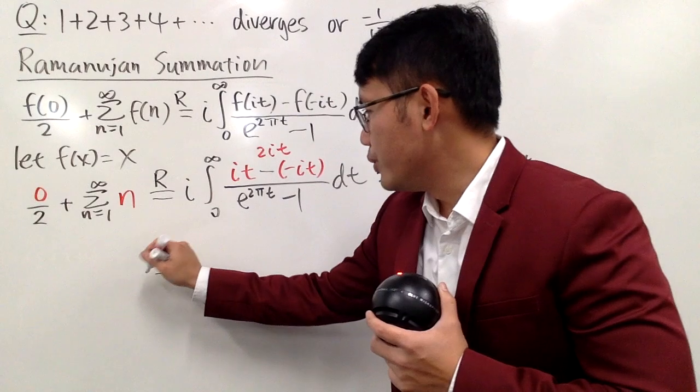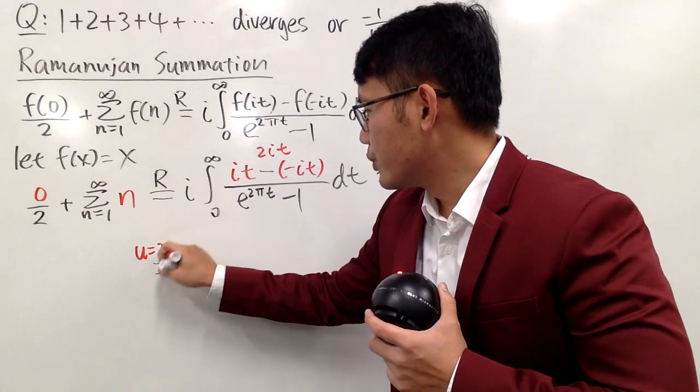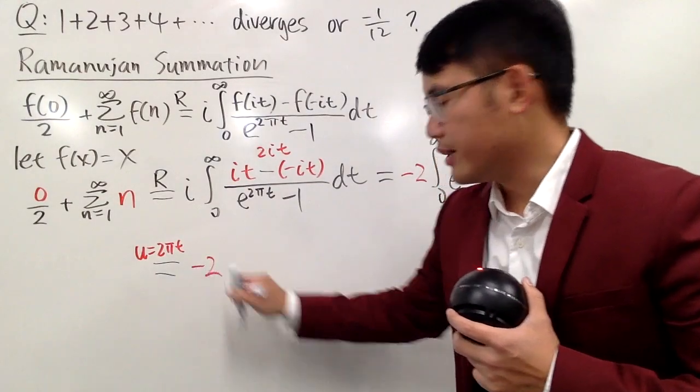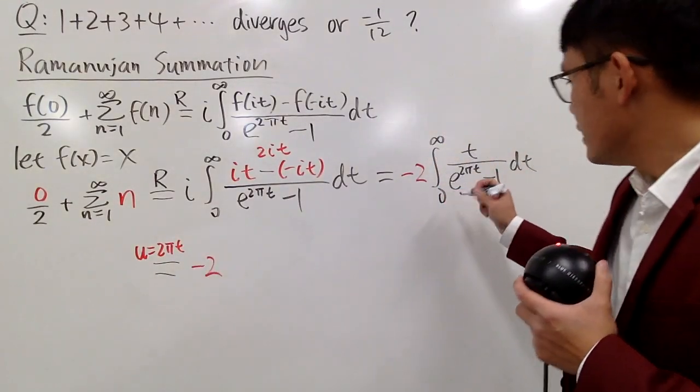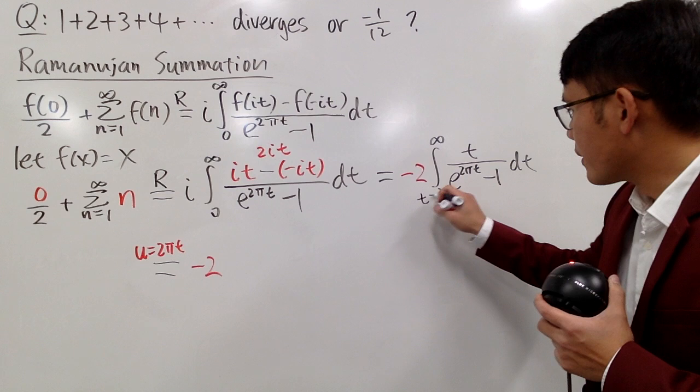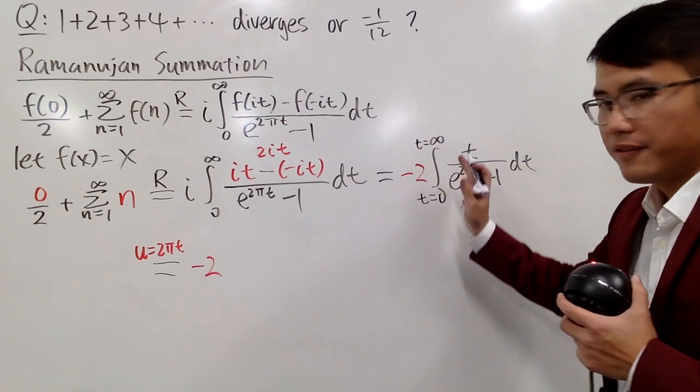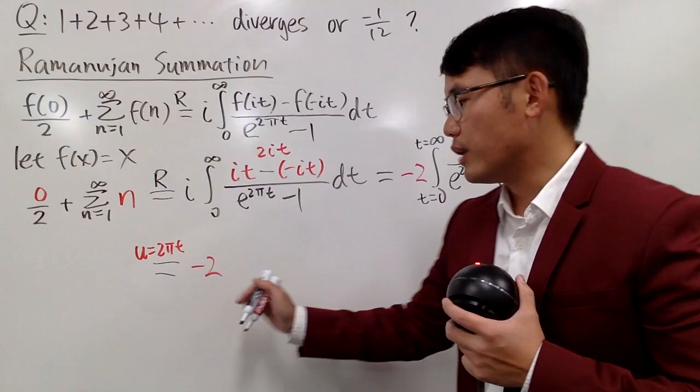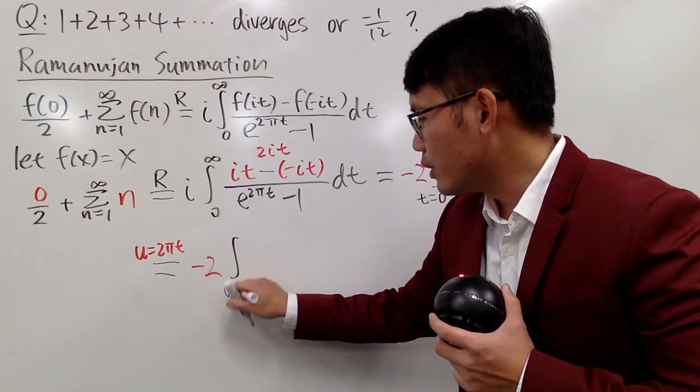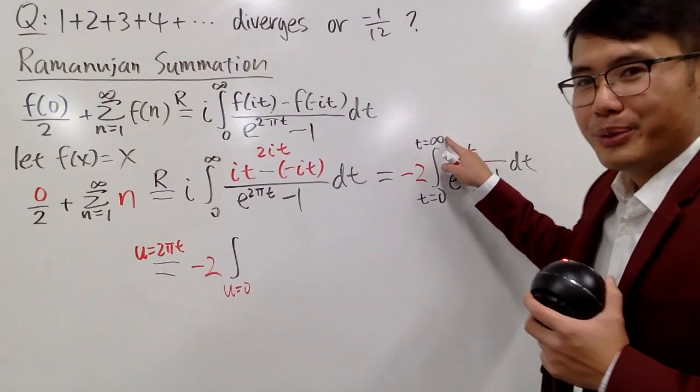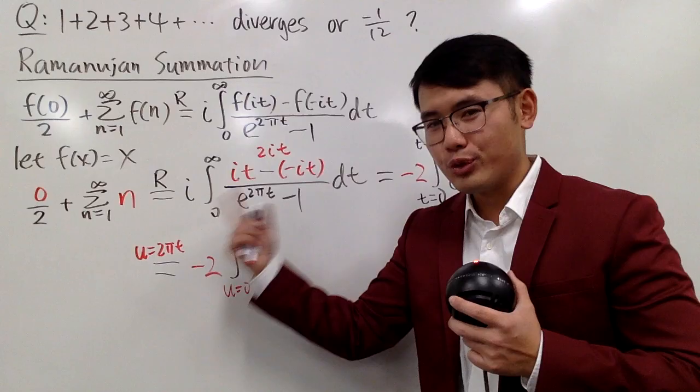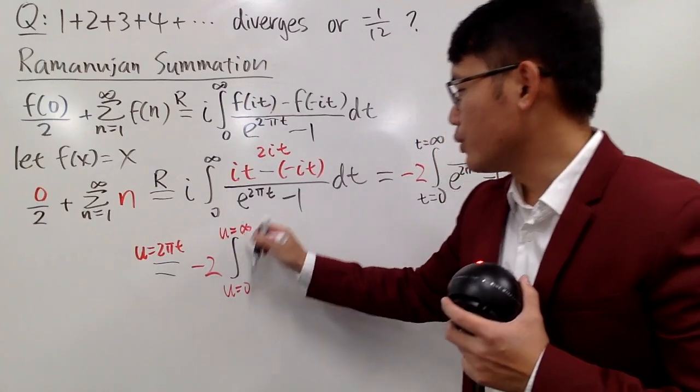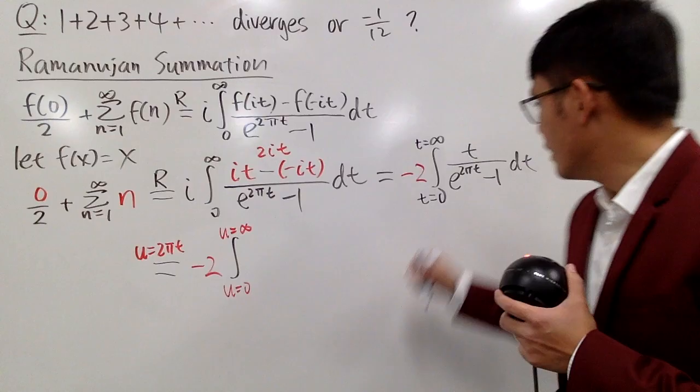To do so, I will just need a little u-sub. So I will take u equal to 2 pi t. In the front, we have the negative 2. And then, notice this integral is going from t equal to 0 to infinity. When t is 0, put it here, u will be 0 as well. So, in the u world, u goes from 0, and you put infinity here, 2 pi times infinity is still infinity, so u will be going to infinity.